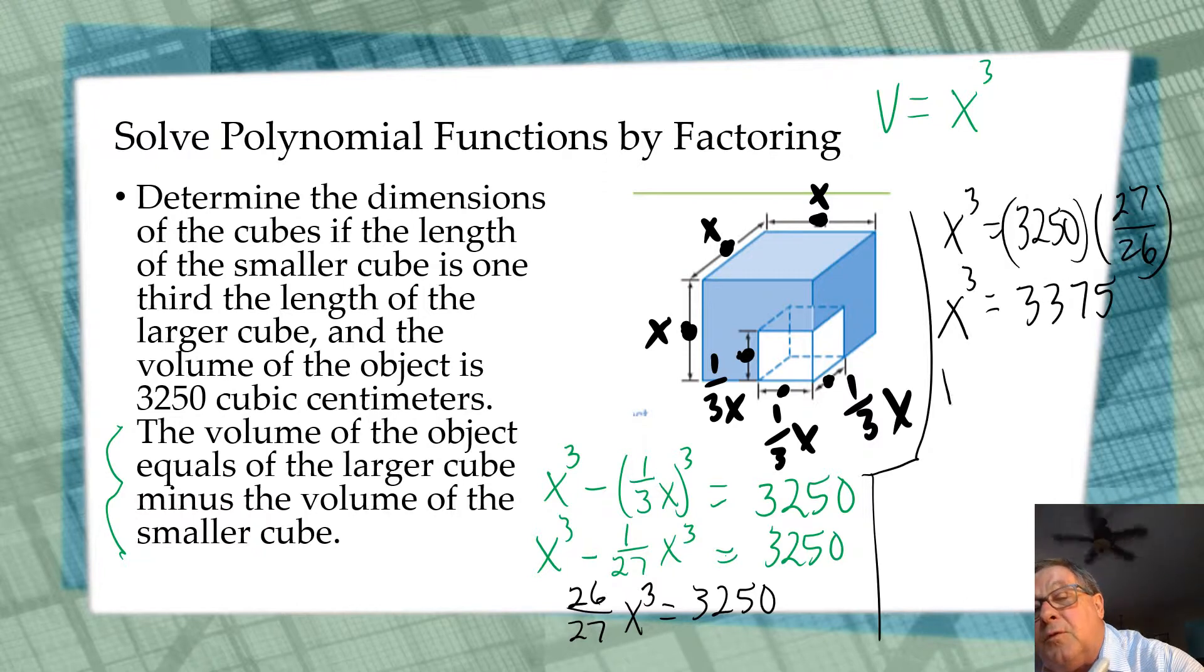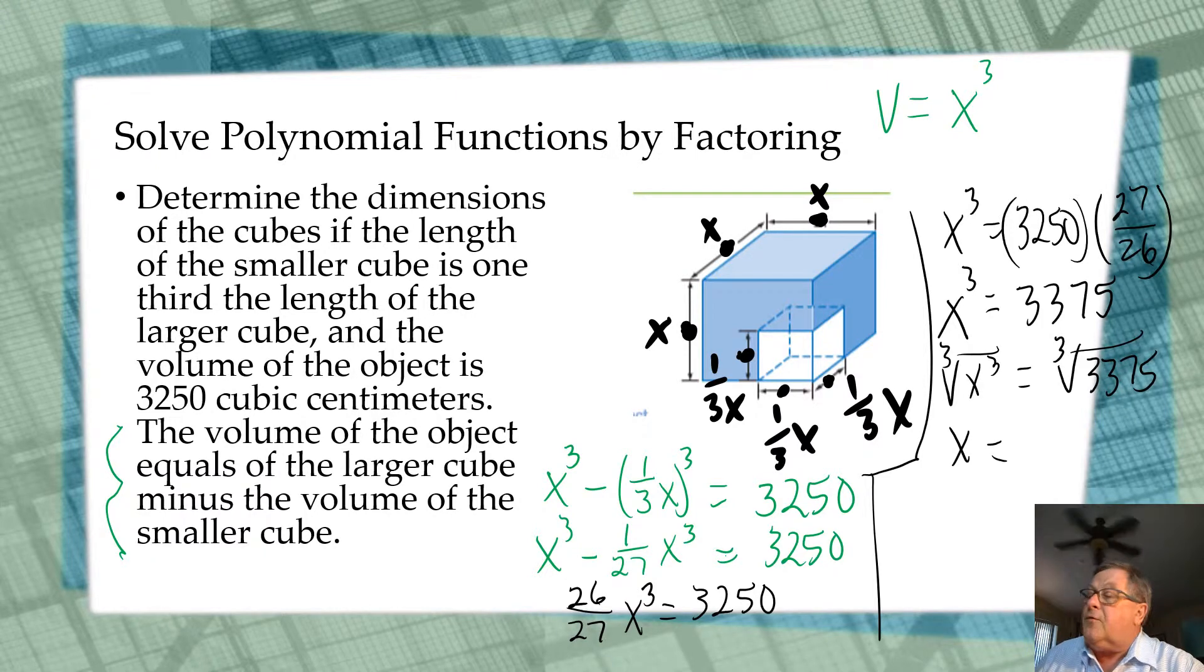Let's take the cube root of both of these. So this is x cubed, and what's the cube root of 3,375? Well, it's 15. So if x is 15, then one-third x, 15 divided by 3, is 5.